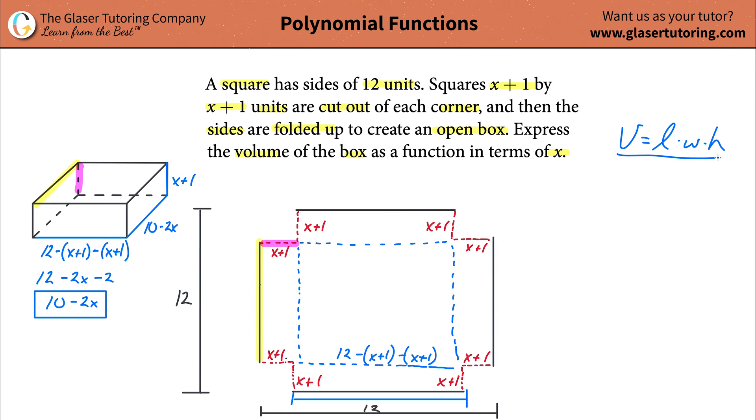And that's going to be x plus 1. Now you have everything you need in order to create your volume equation. So the volume here is going to be the length, which is 10 minus 2x. Then it's going to be the width, 10 minus 2x. And then it's going to be the height of x plus 1. All multiplied together.